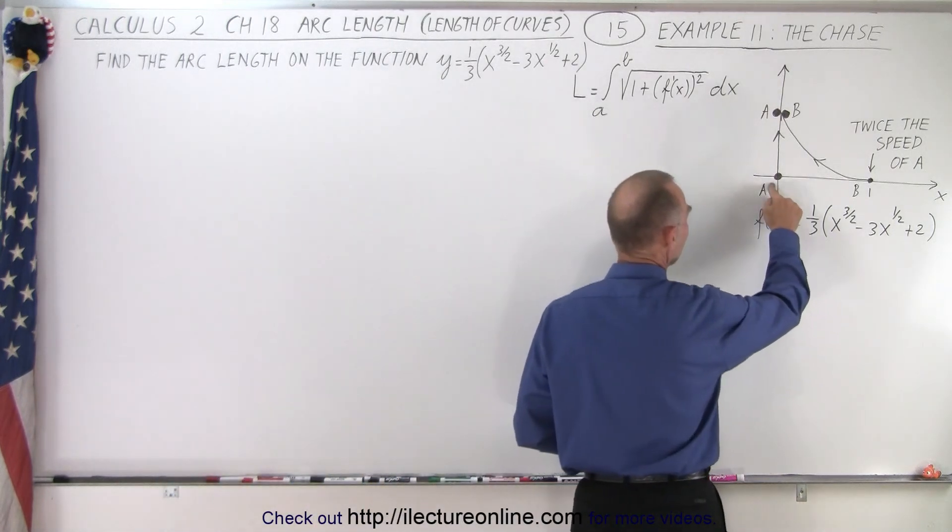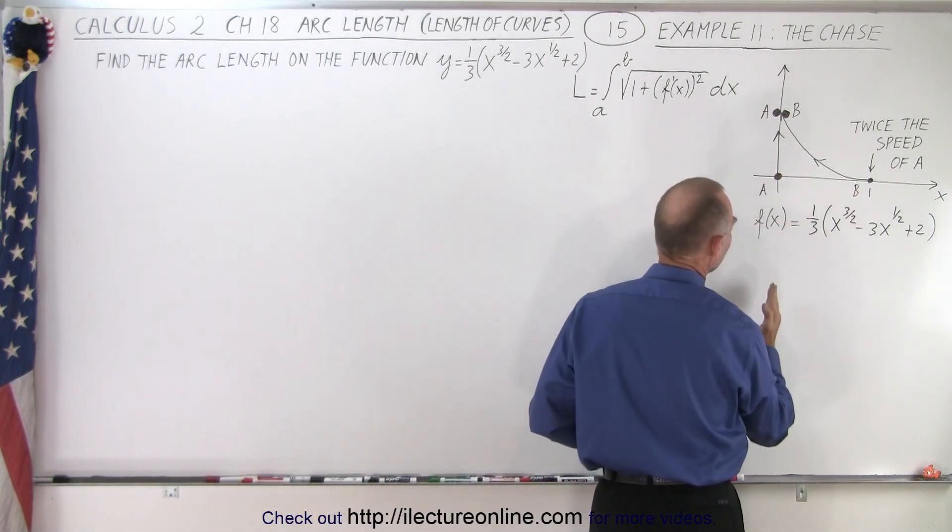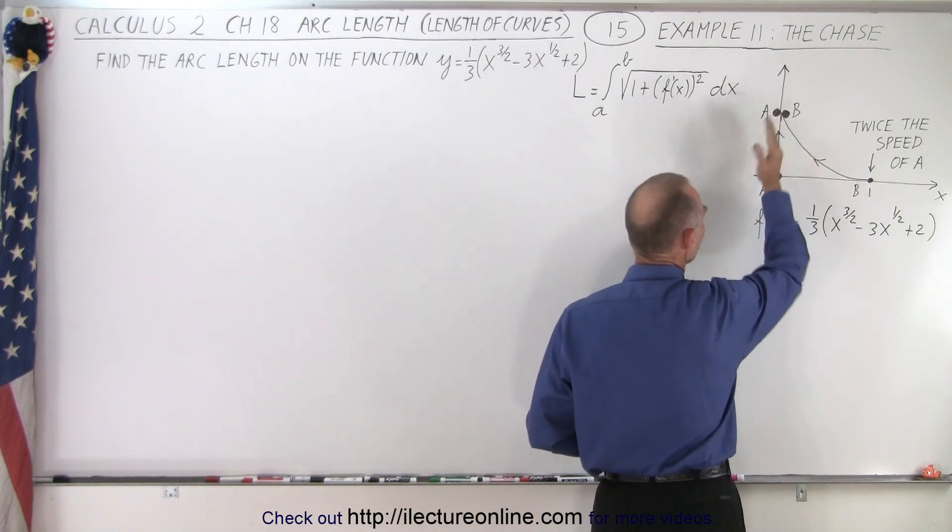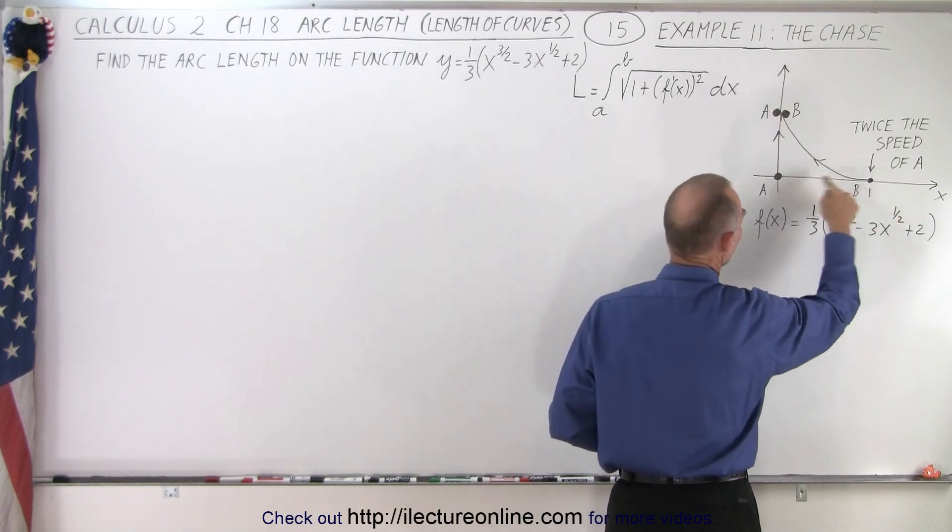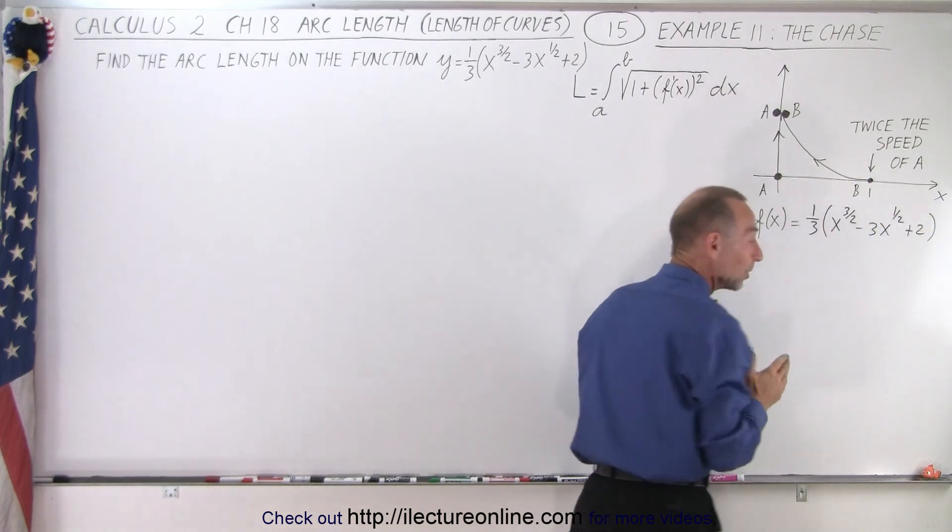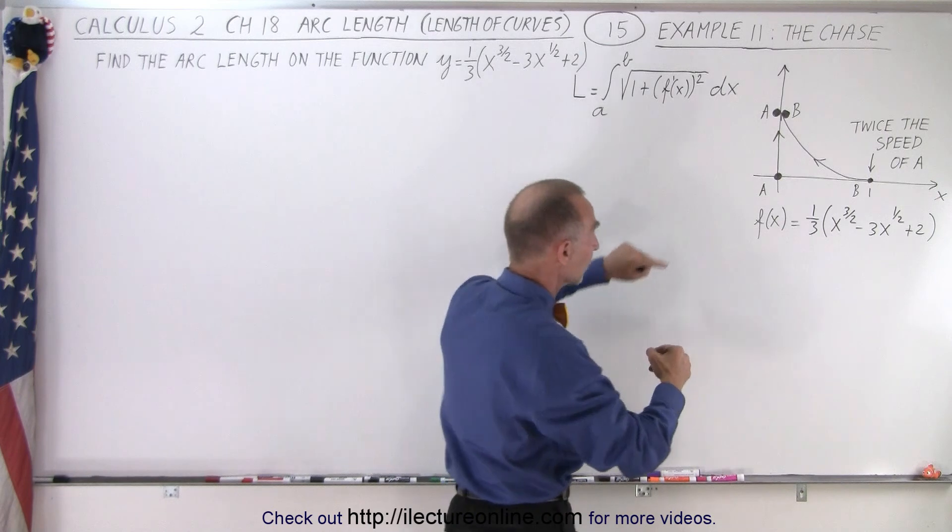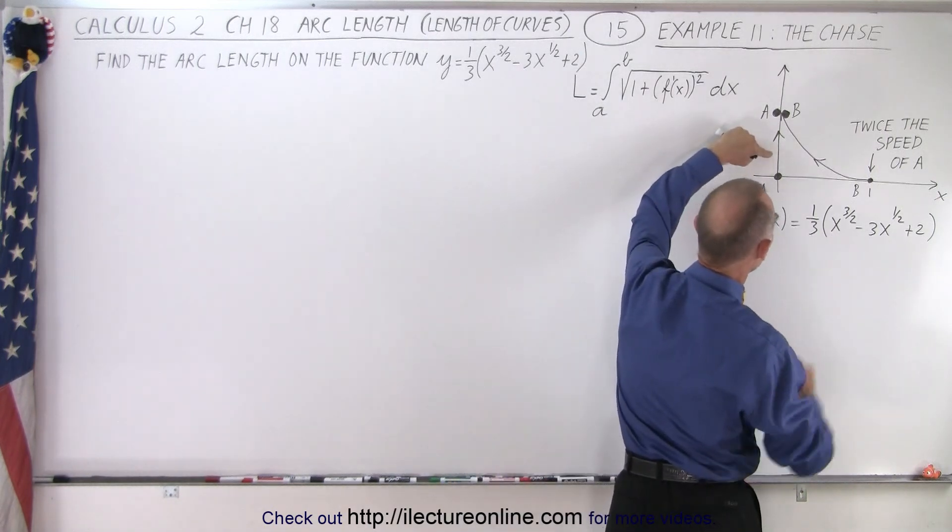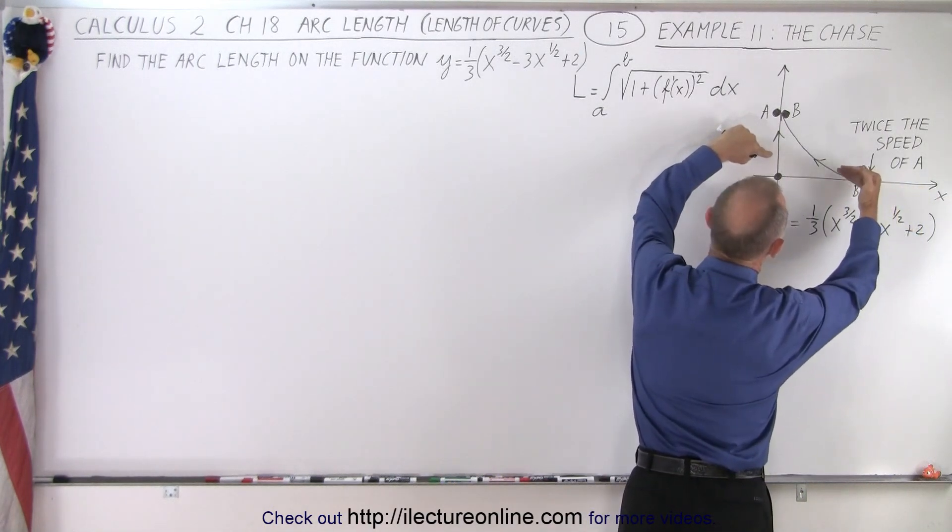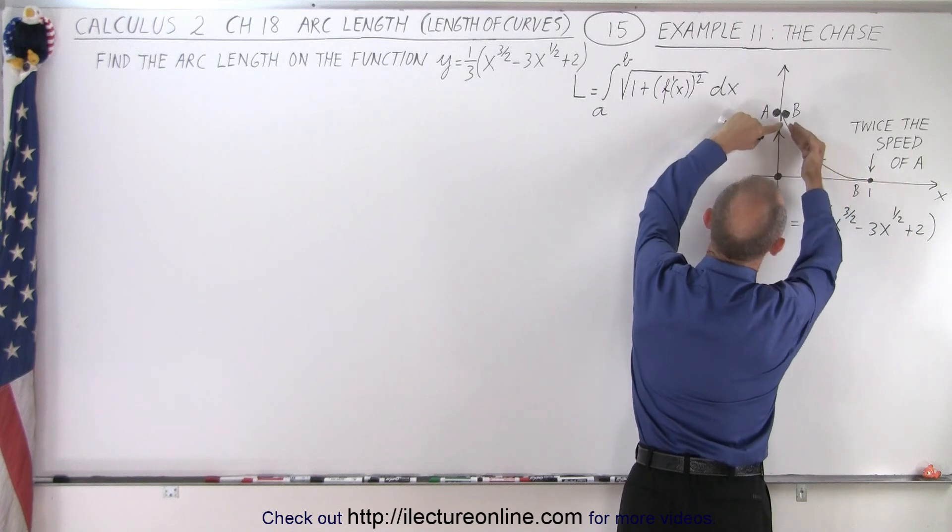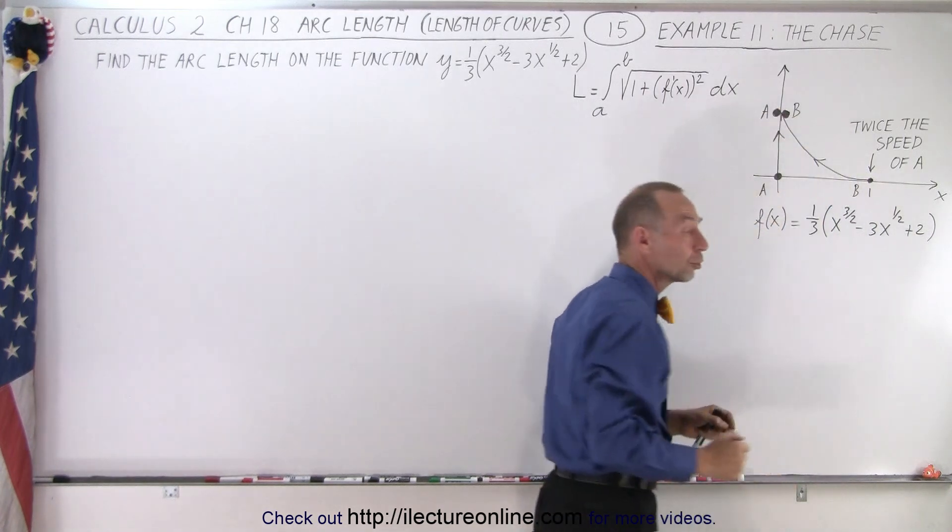We have two objects, object A and object B. Object A moves upward on the y-axis. Object B moves from the right to the left, at least initially on the x-axis, but object B is always pointed directly to wherever object A is. So as object A moves up, object B begins to curve because they're always pointing until they meet together along the y-axis.